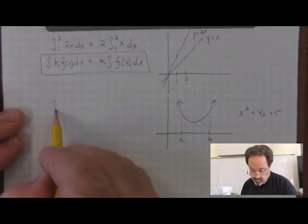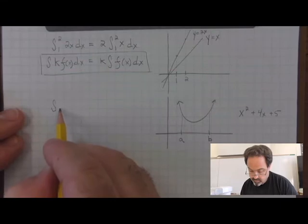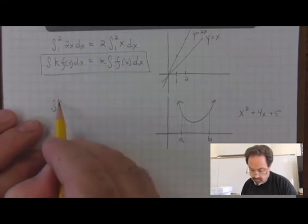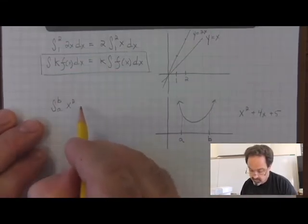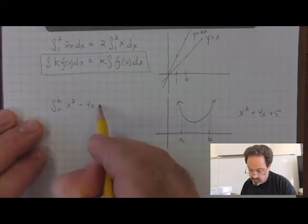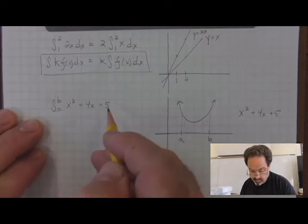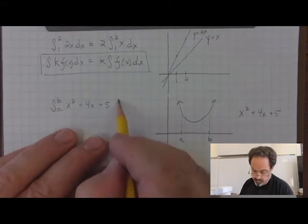We can set up a definite integral from a to b under this curve x squared plus 4x plus 5 with respect to x.